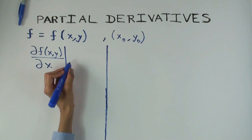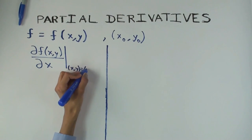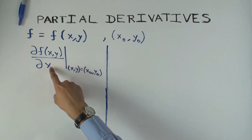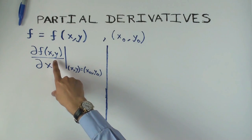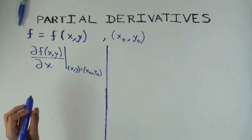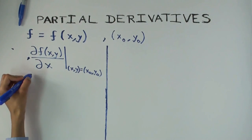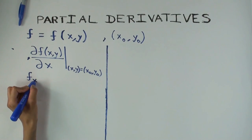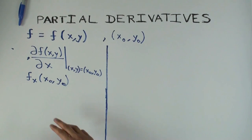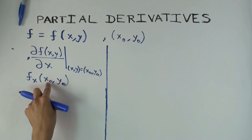You have to specify at what point you are computing it, and the point specification is like this. Notice that you have to specify not just the x value but also the y value. So when you determine the derivative with respect to x, you are required to specify the value of the point — both coordinates. This x-derivative is also denoted as f sub x of x-naught, y-naught. So f sub x means the derivative of f with respect to x at the point x-naught, y-naught.